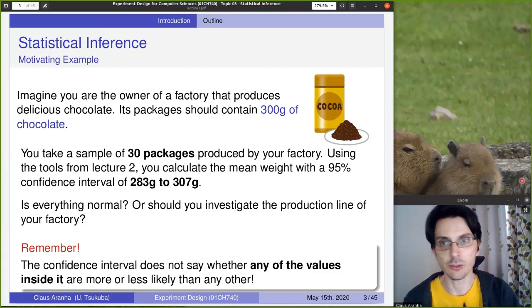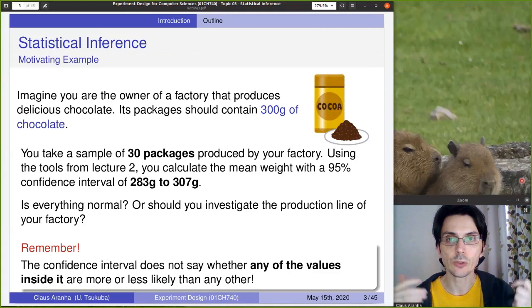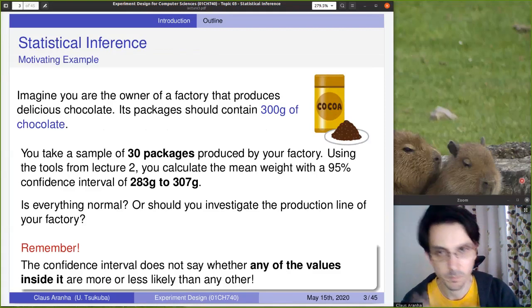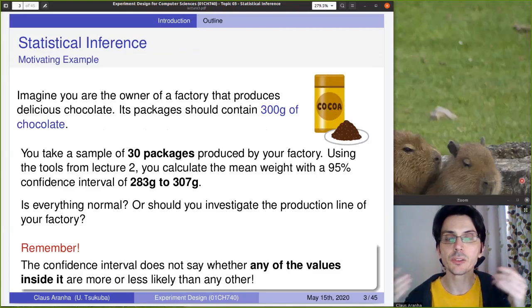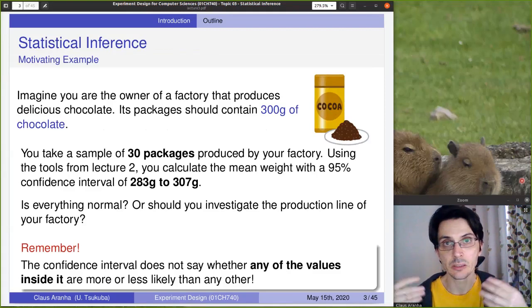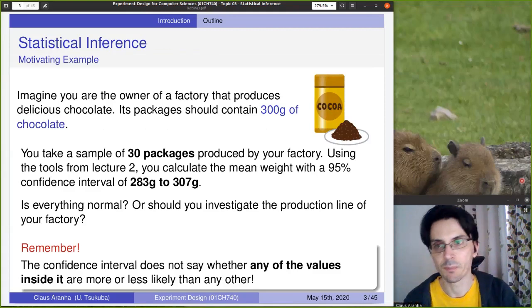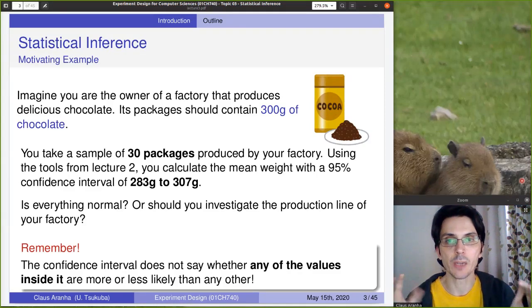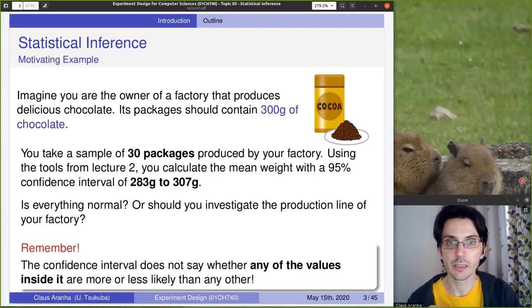So let's give an example of what we're talking about when we say we're making a decision. Imagine that you are the owner of a factory that produces chocolate. The factory should produce packages of chocolate with 300 grams of chocolate powder. Now you want to know if the operation of your factory is okay, or if there is any problem. So what do you do? You take a sample of 30 packages.